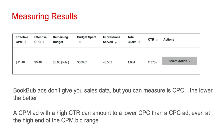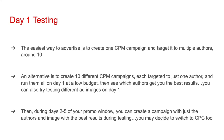The easiest way to advertise is to create one CPM campaign and target it to multiple authors — around 10 is a good number. However, I do recommend you use day one to do some testing. Unlike with Amazon ads, there is not a long approval process for BookBub ads. You can do a good amount of testing during your promo window. What you can do is create 10 different CPM campaigns, each targeted to just one author, and run them all on day one at a low budget — for example, $10 per campaign — then see which authors get you the best results.